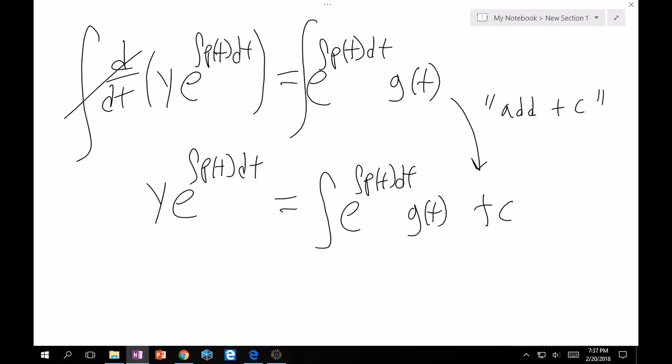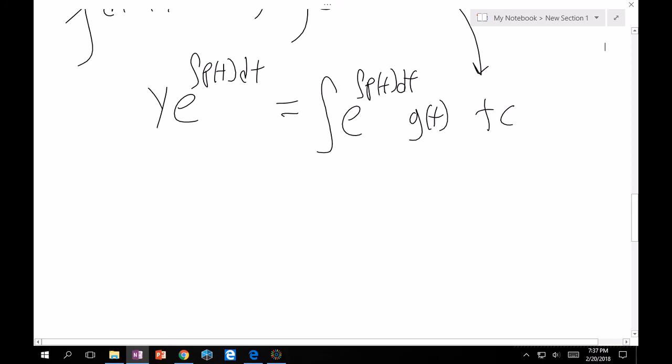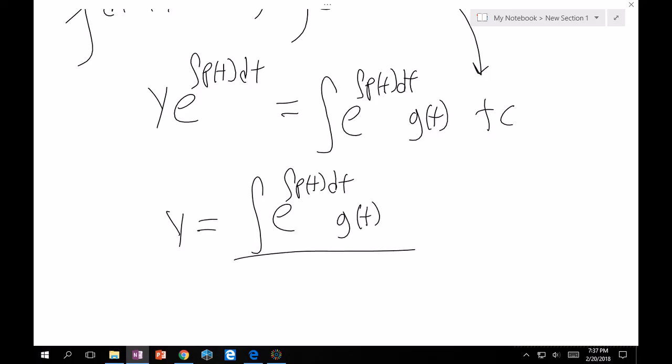Now, moving on, the whole purpose of this was to solve for y, right? So now let's write y is equal to my integral of e to the integral of p(t) dt g(t) divided by e to the integral of p(t) dt.